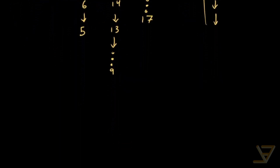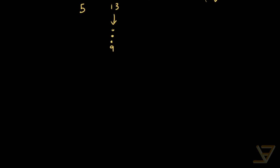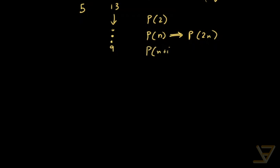So let's see what that means formally. We're going to prove the base case P(2). Then we're going to prove that P(N) implies P(2N), so we can iterate through all the powers of 2: 2, 4, 8, 16. And we're going to show that P(N+1) implies P(N), so we can go backwards. So there are three components to this proof. Let's dig in.